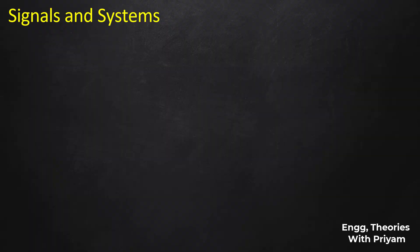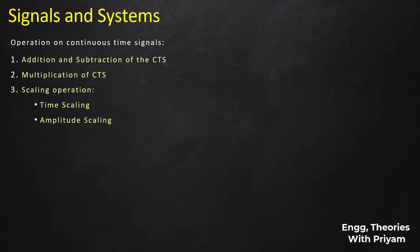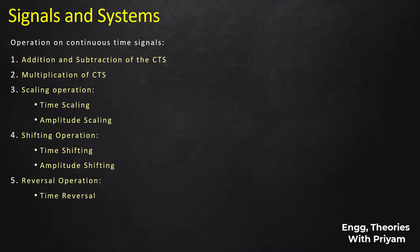In this lecture of signals and systems, we are going to start operations on continuous time signals. These operations can be classified as: addition and subtraction of the continuous time signal, multiplication of the continuous time signal, scaling operation which includes time scaling and amplitude scaling, shifting operation which includes time shifting and amplitude shifting, and finally reversal operation which includes time reversal and amplitude reversal of the continuous time signal.